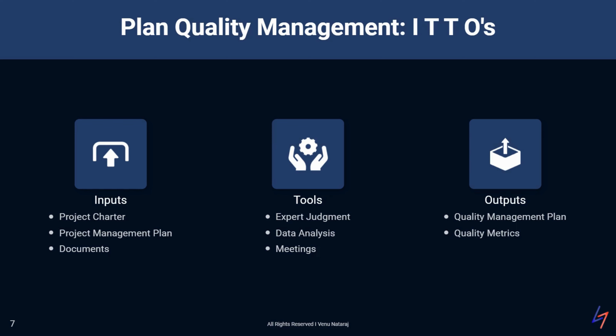The quality management plan becomes part of the overall project management plan. The quality metrics are specific measures we will use to assess quality throughout the project. By using these inputs, applying these tools and techniques, and producing these outputs, we create a solid foundation for quality management throughout the project life cycle.